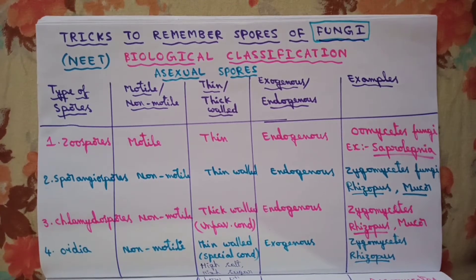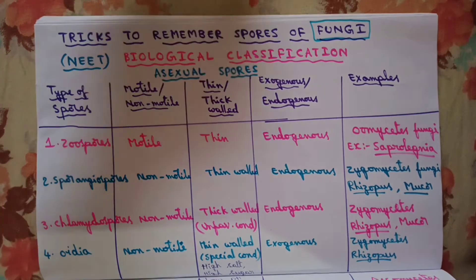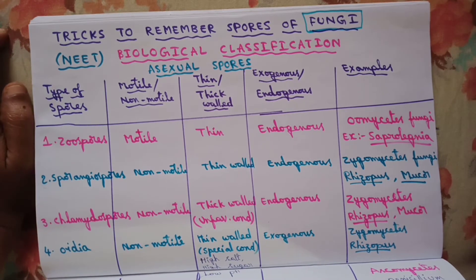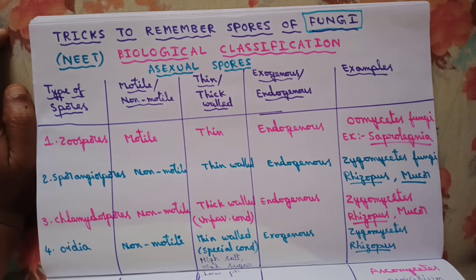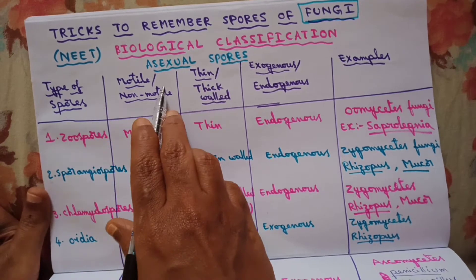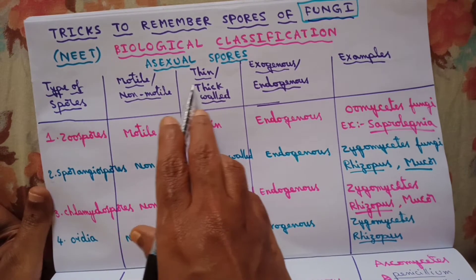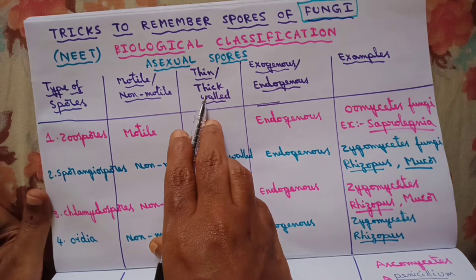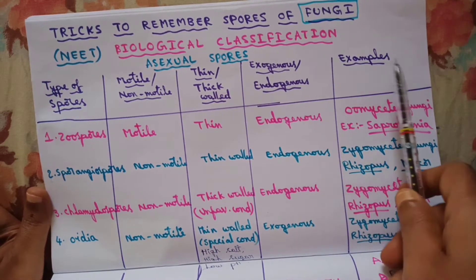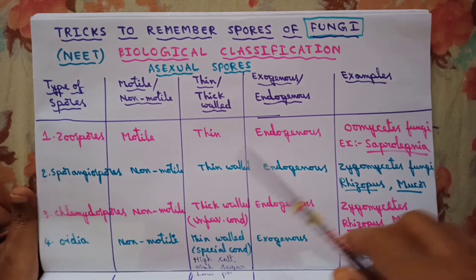Hello students, in this video I want to give you some excellent tricks to remember the different types of asexual spores formed by fungi. Fungi comes under the chapter biological classification. I am going to cover types of asexual spores — whether they are motile or non-motile, thin-walled or thick-walled, endogenous or exogenous, and examples of fungi which form certain types of asexual spores.